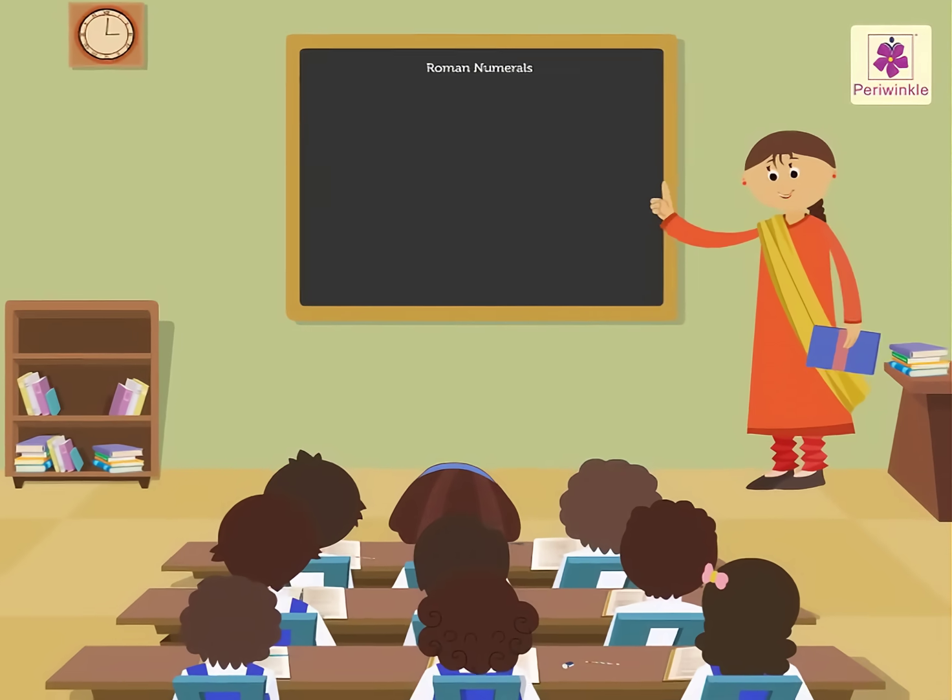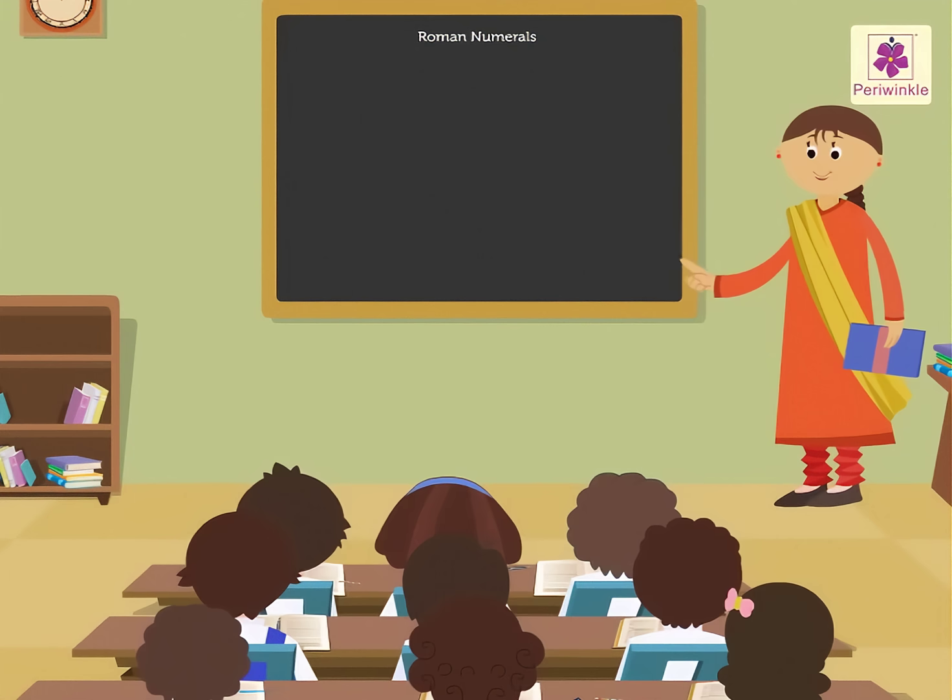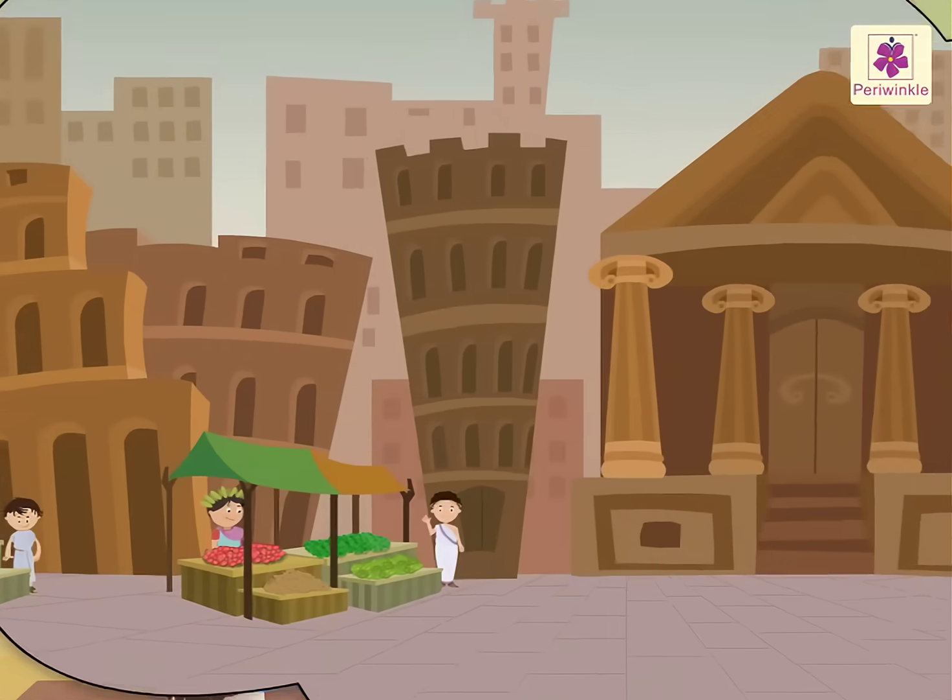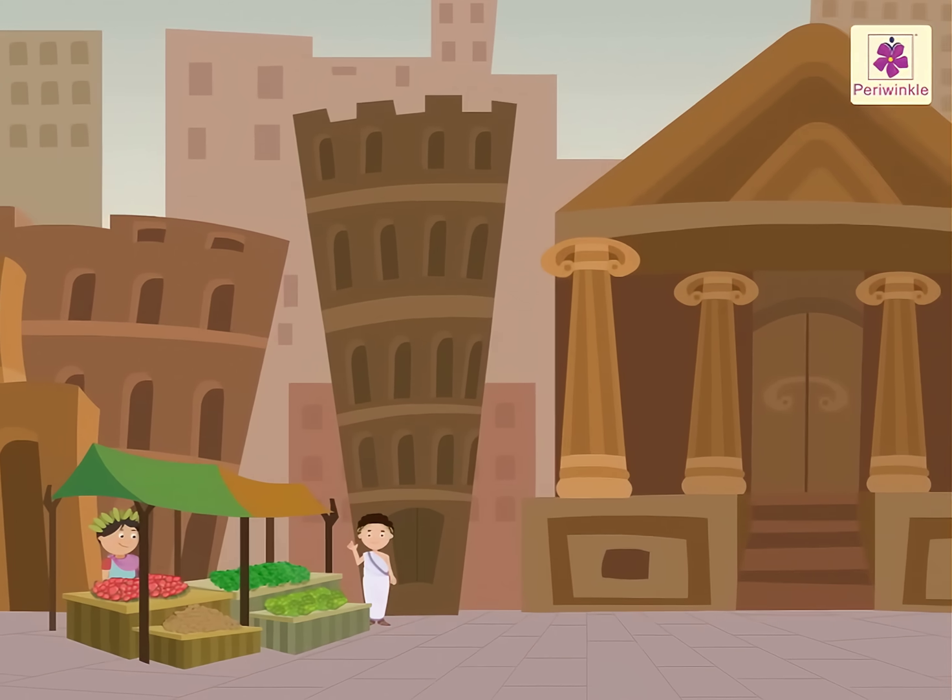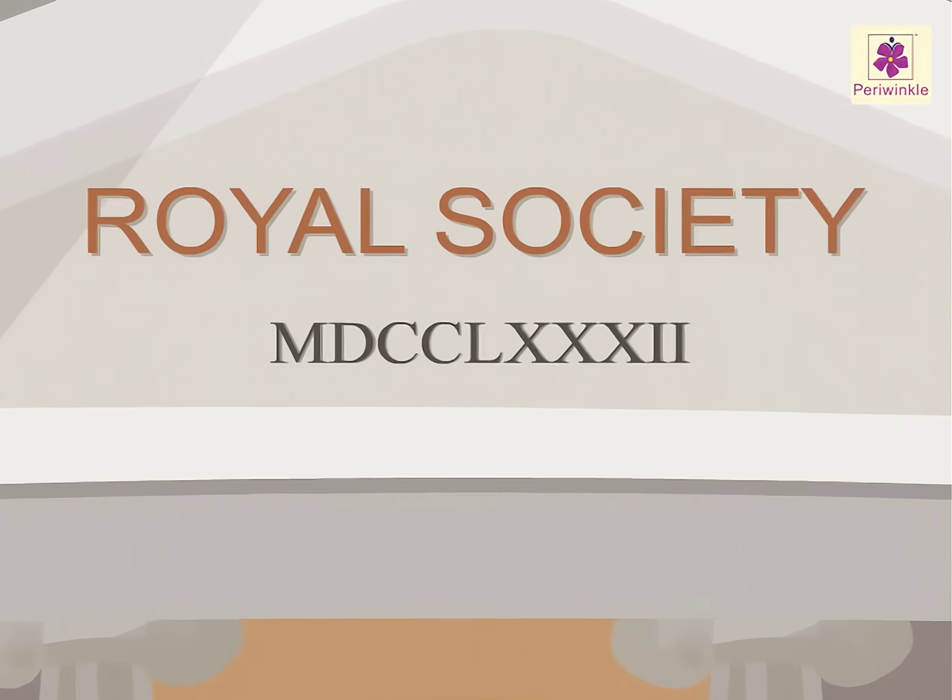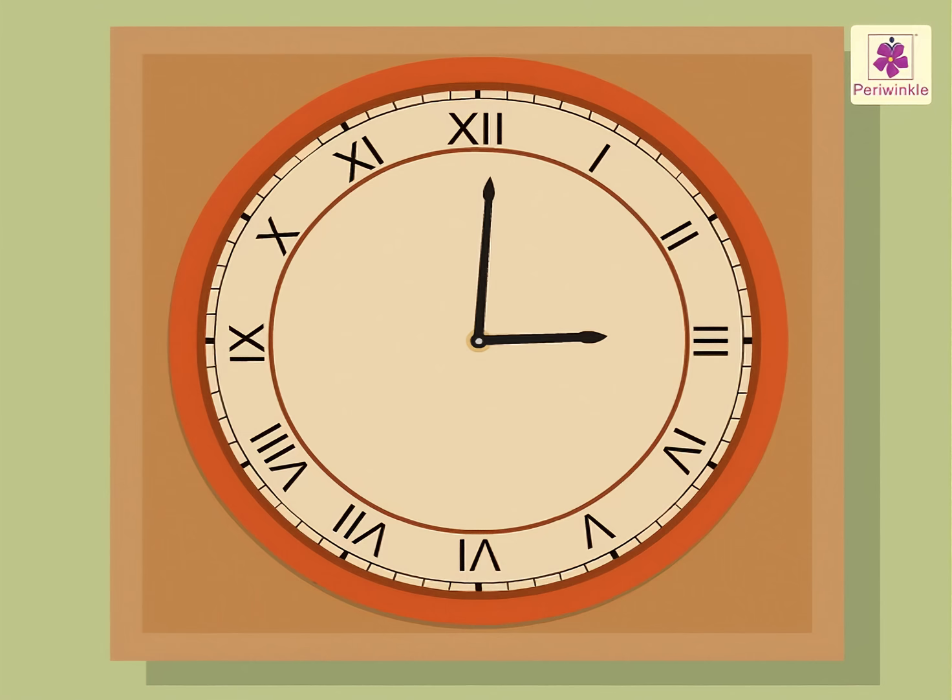Today, let us revise and understand more about Roman numerals. We know that the ancient Romans used letters to write numbers. Even today, the building date on monuments and public buildings is marked in Roman numerals. And we also use Roman numerals in clocks and watches.